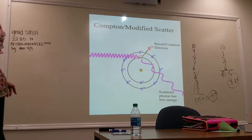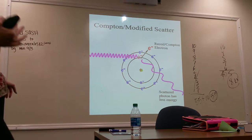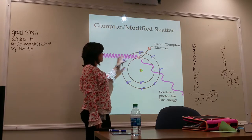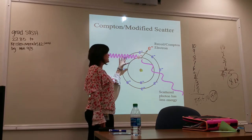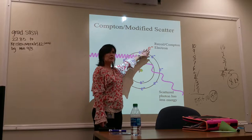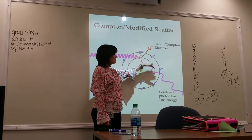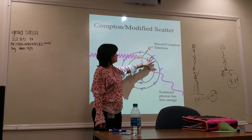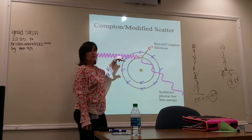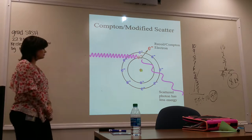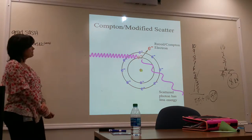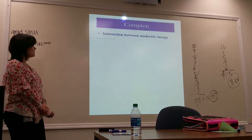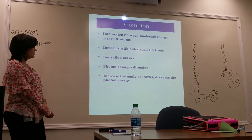This is called the Compton or modified scatter. The X-ray photon does change in energy. This is 100% energy coming in. If it took 40% of the energy to knock that out, how much energy is left here? 60%. The energy of both of these will equal this energy. That's the Compton effect.